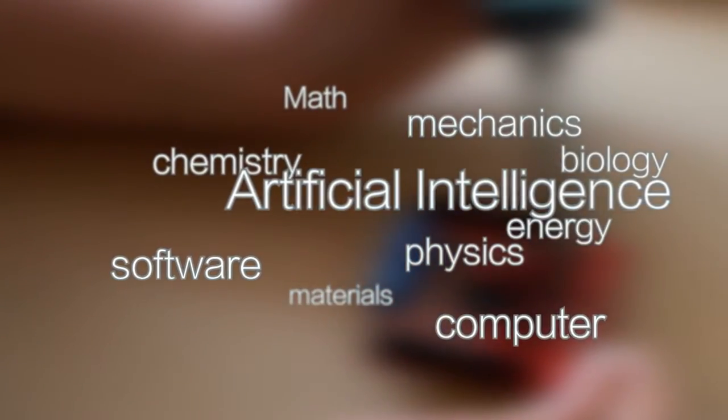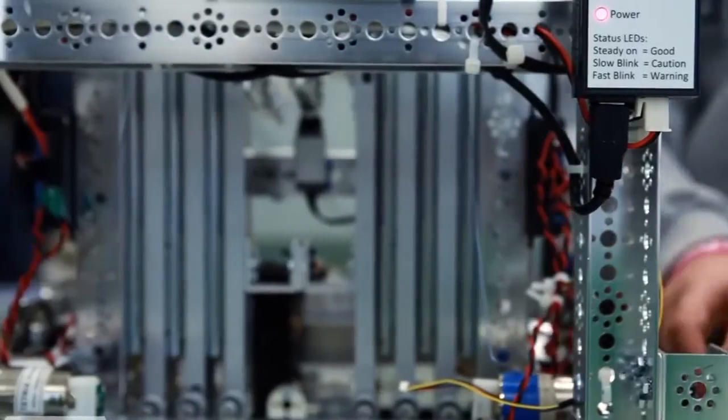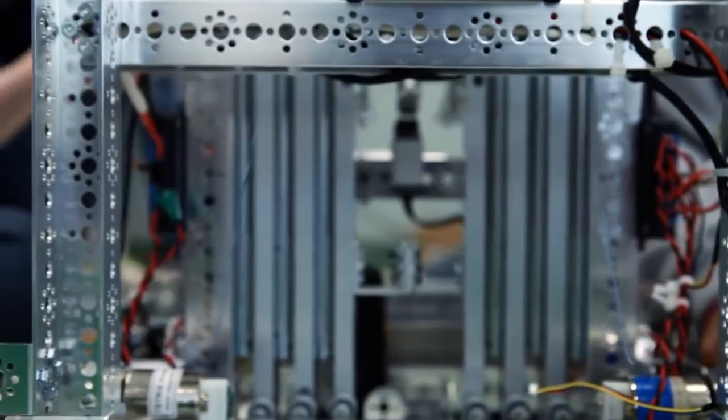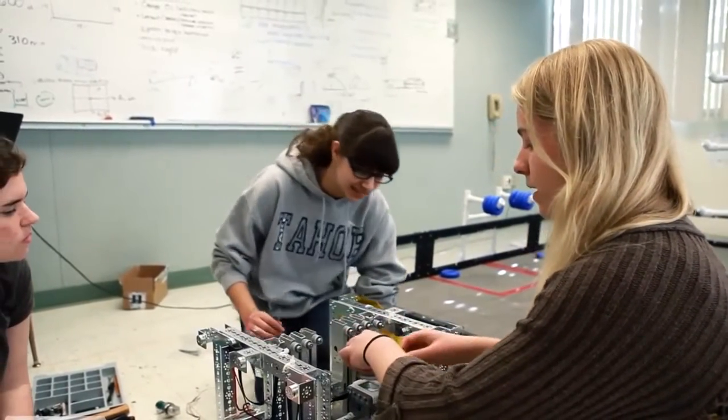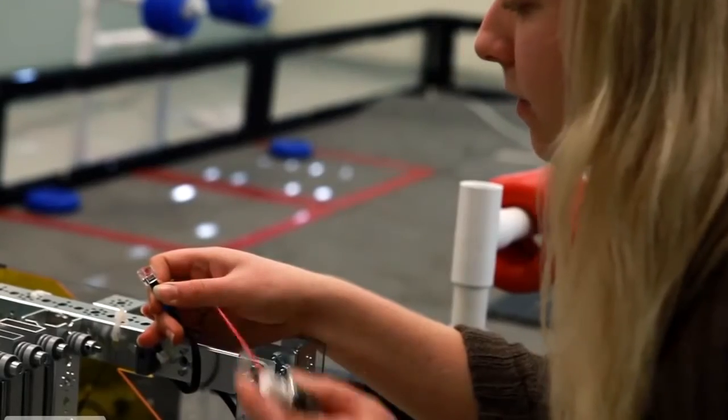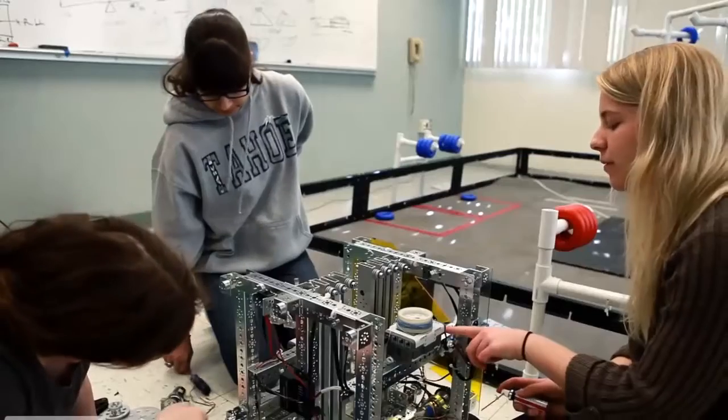Two, comprehensiveness. Educational robotics enables mastery of math, physics, chemistry, biology, mechanics, electronics, materials, energy, computer hardware, software, and artificial intelligence. The projects designed for educational robotics provide students with access to scientific and technological knowledge in various fields.